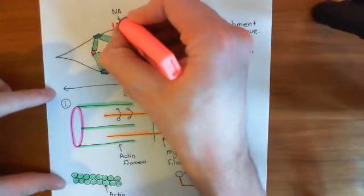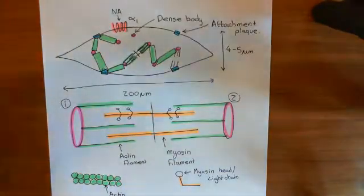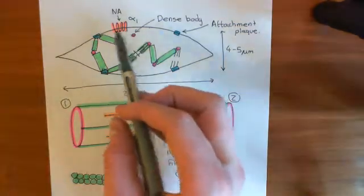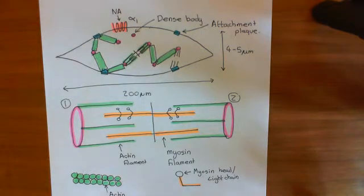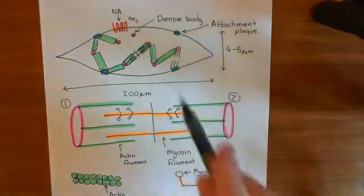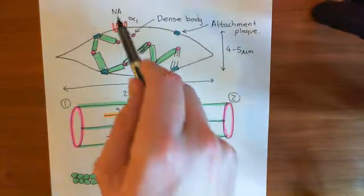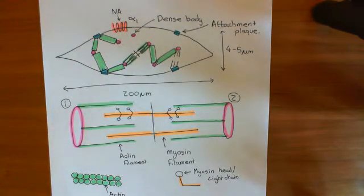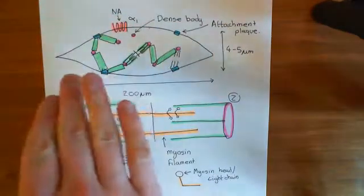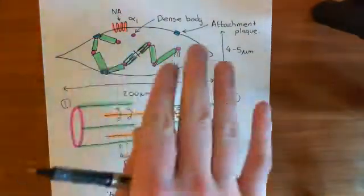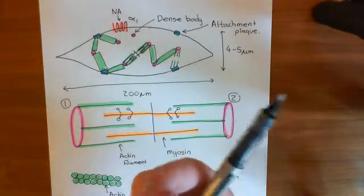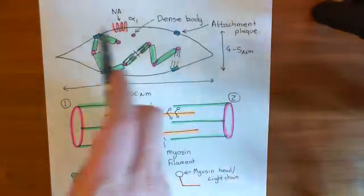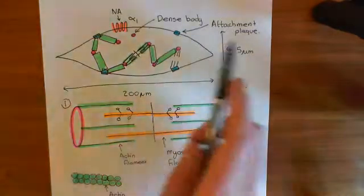Here in red is the alpha-1 adrenergic receptor. When noradrenaline binds to the alpha-1 receptor, it works via a GQ-coupled pathway — the same pathway we've already seen in endothelial cells, where bradykinin acts on B2 receptors which are GQ-coupled. The same pathway can happen in smooth muscle cells, but in this case the agonist is noradrenaline, producing calcium waves. The alpha-1 receptor activates the alpha-Q subunit, which activates phospholipase C-beta, which produces IP3. IP3 results in calcium waves propagating through the smooth muscle cells.